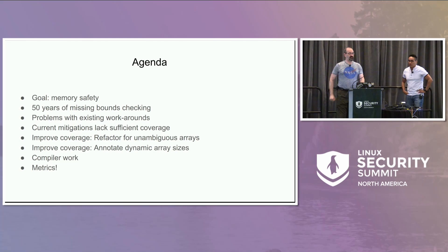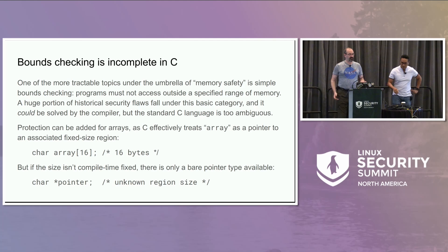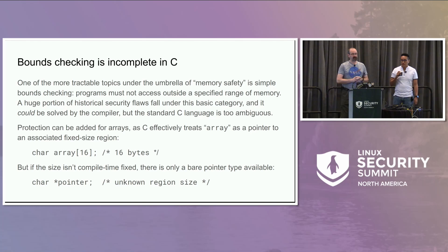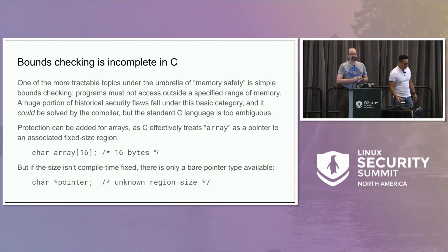The goal is memory safety. One of the more tractable topics for memory safety is bounds checking — getting spatial safety. A huge number of security flaws fall into this basic category, and a lot of it could be solved by the compiler. The problem is that the standard C language is just too ambiguous and lacks a way to describe a lot of these bounds.